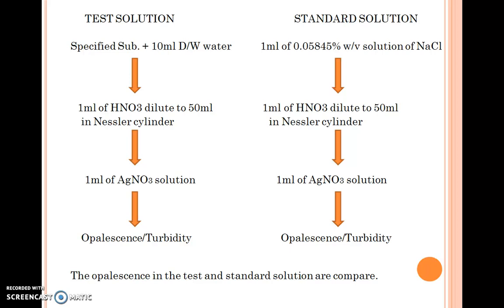So it complies with the test and the sample passes. However, if your test solution contains more opalescence or turbidity than the standard, this indicates your sample contains chloride impurities which are beyond the prescribed limit.